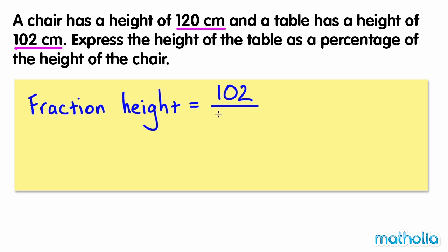102 over 120 can be simplified as both the numerator and the denominator are factors of 6. Dividing both numbers by 6 gives us 17 over 20. The fraction is in its simplest form.